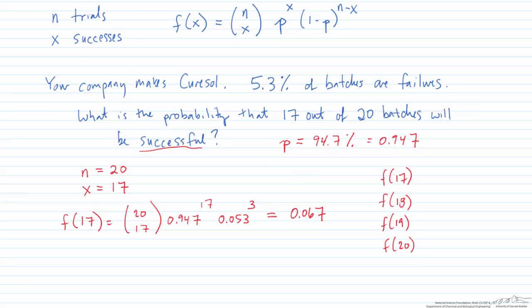If you plug those values for x into binomial distribution, instead of 17 we have 18, 19, or 20. And instead of 3 we have 2, 1, or 0. So you would get the following. If you tally those up you would get 98%. So you have a 98% chance that at least 17 out of 20 batches will be successful.